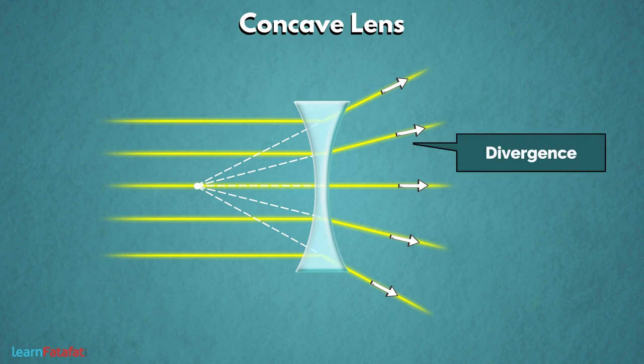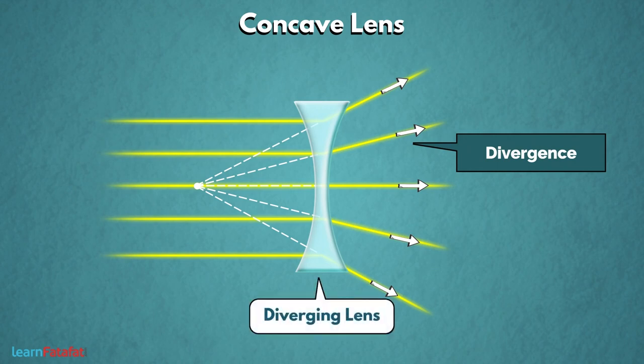जैसे कि concave lens light को diverge कर सकता है, इसके कारण concave lens को diverging lens भी कहा जाता है.